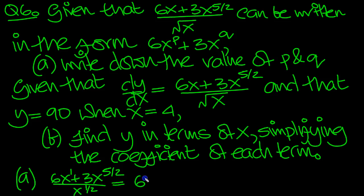When you divide you minus top take bottom. So 1 take a half is a half. So the first part will be 6x to the half plus 3 lots of. And the same goes here. When you divide you minus top take bottom. 5 over 2 take a half is 4 over 2 which is 2. So that's x squared.